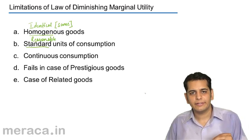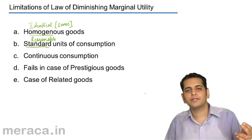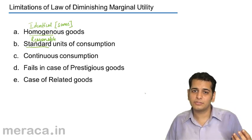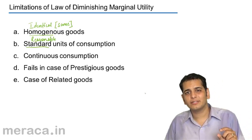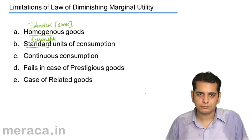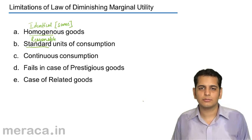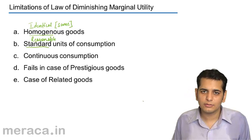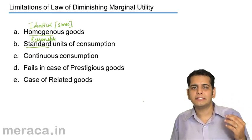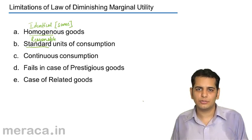The law does not operate in case the related goods do not remain constant or there is a change in related goods. Related goods are of two types: complementary goods and substitutes. The absence or presence of substitutes or complementary goods might affect the consumption pattern and the utility derived from the commodities being consumed. For example, assume the first cup of tea you have is without sugar and the second cup is with sugar. The utility derived from the second cup will obviously be more than the first. So in such a case, the law of diminishing marginal utility will not apply.